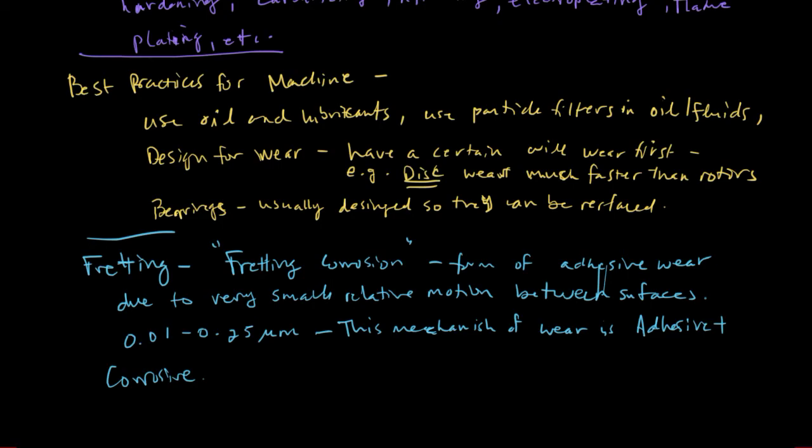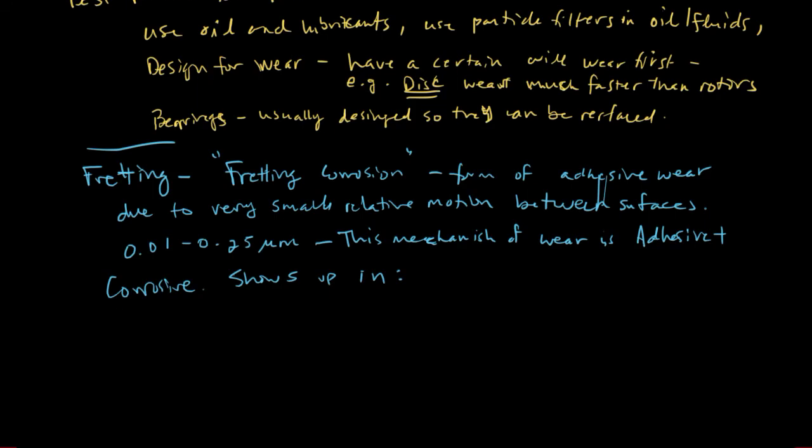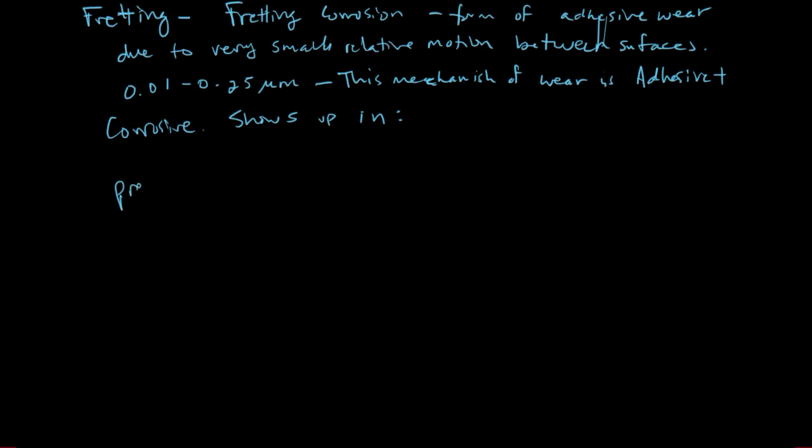When we say small, we're talking about like 0.01 to 0.25 microns. A sheet of paper is about 100 microns. This mechanism of wear is usually both adhesive and corrosive. Usually fretting wear is also associated with corrosion. You might have seen it before. It often shows up in things like press fits, bolted joints, not necessarily at the bolts but maybe around the joints where you have higher loads between surfaces that are in contact, riveted joints, leaf springs,